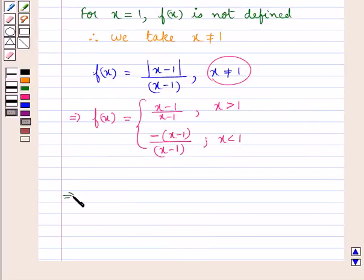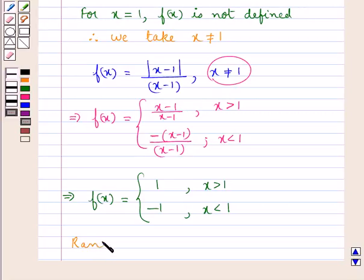This means the function f(x) equals 1 for x > 1 and equals -1 for x < 1. Thus, the range of f(x) is the set {-1, 1}.